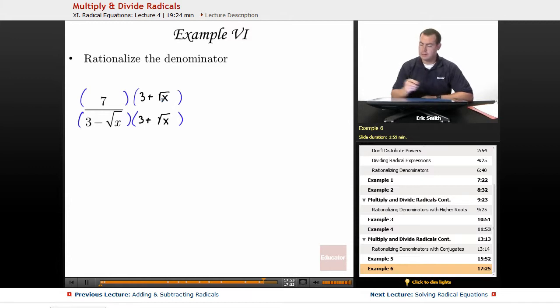Let's see what this does to the top as we distribute. And remember that on the bottom, we will FOIL. I get 21 plus 7 times the square root of x for the top.